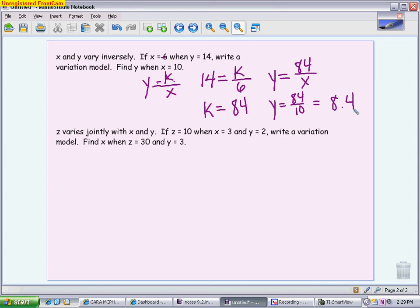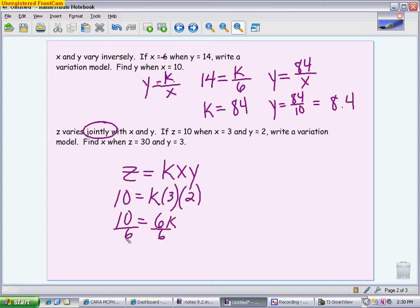The next one says that it varies jointly. So when you see the word jointly, this means that my basic equation is z equals kxy. This time I have to have three pieces of information to find k. z is 10, x is 3, y is 2. So we get 6k equals 10 divided by 6. We get k to be 5/3. Or if you want, you could write it as a decimal, 1.6 repeating.